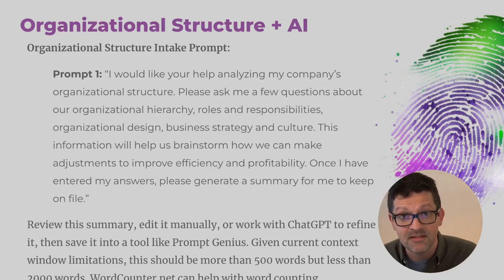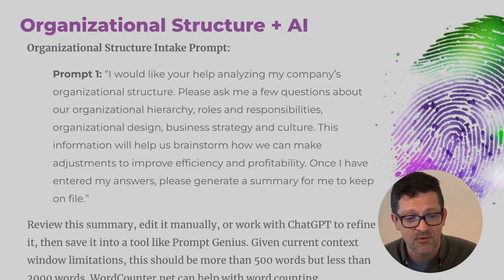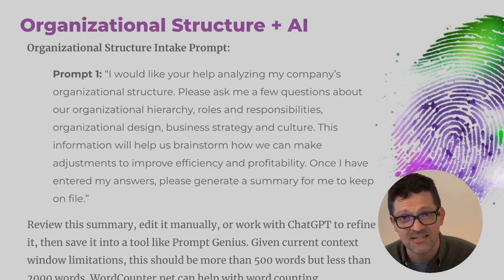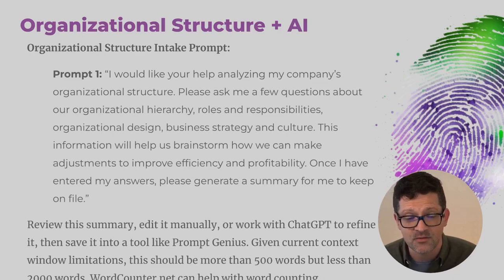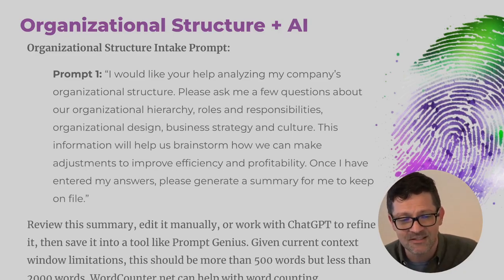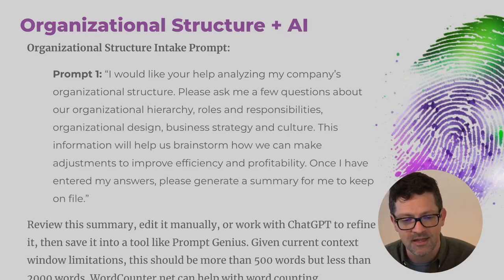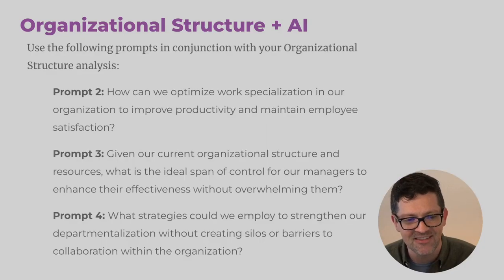Once you have done this and created that summary with ChatGPT, you want to review it, edit it manually or work with ChatGPT to refine it, and then save it somewhere. I like a tool called Prompt Genius — I've been using that a lot to save these different types of analysis. Given current context window limitations, this should be more than 500 words but less than 2,000 words. There's a site called wordcounter.net that can help figure out how many words you have. Once you have that, you're off to the races with all these other prompts.